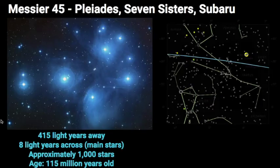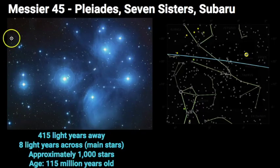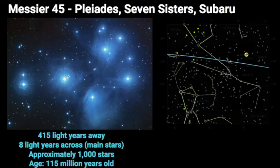A prime example of an open star cluster is Messier 45, known as the Pleiades, or the Seven Sisters, or Subaru in Japanese culture. It's very famous — first because it's very easily identified with the naked eye, and second because it's just a really beautiful star cluster. It's fairly close to us, only 415 light years away. The main stars span about eight light years across, but in reality there are over a thousand stars within this cluster. Its age is about 115 million years old.